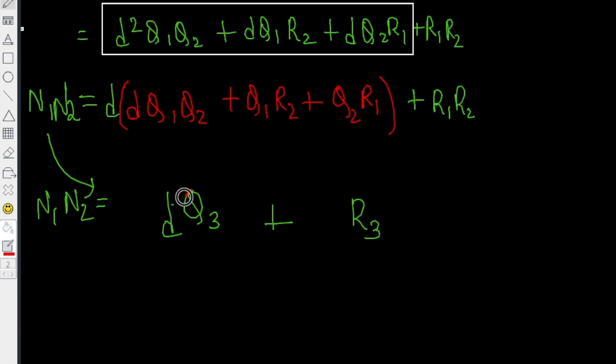They look very similar. q3 can as well be this red portion and r3 could be equal to r1 r2. In fact, if r1 r2 is smaller than D, that is indeed the case, because then I can do nothing more with r1 r2.